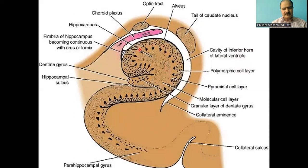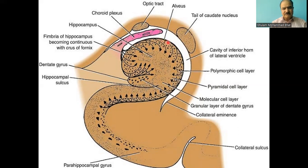The hippocampus is located in the inferior horn of the lateral ventricle, lined by ependyma. Hippocampal neurons give rise to axons which form a layer of white matter on the ventricular aspect of the hippocampus called the alveus. This alveus ultimately forms a bundle tract called the fimbria.